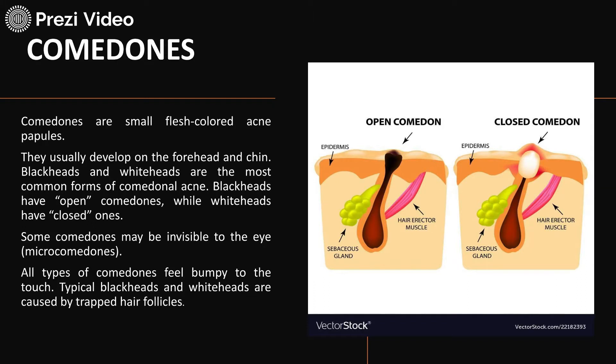Blackheads have open comedones whereas whiteheads have closed ones. Whereas some comedones may not be visible to the eyes, all types of comedones basically have the bumpy appearance. Typically, blackheads and whiteheads are caused by trapped hair follicles. Acne can be further classified into comedones — there are basically two types: black comedones and white comedones, also known as open comedones and closed comedones.